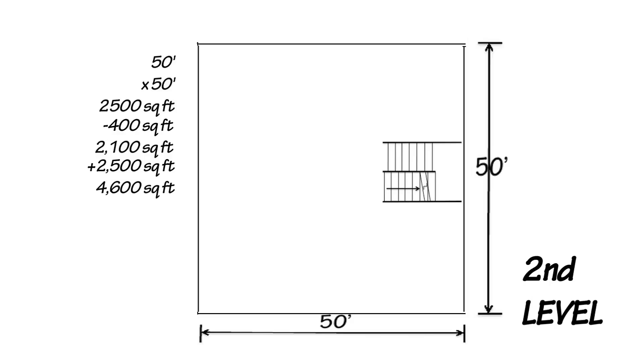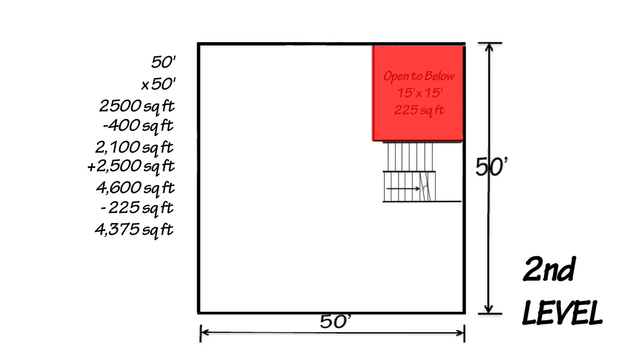Now let's take a look at what happens when you add two-story space. In this slide, we've added a two-story family room to the first floor of the home. By doing so, we've had to remove a 15 foot by 15 foot area from the walking space of the second floor. This is 225 square feet. So now we subtract that 225 square feet from the 4,600 square feet, and that leaves us with a home that is now 4,375 square feet. Let's say hypothetically that this home costs $500,000. Your cost per square foot would be $114.